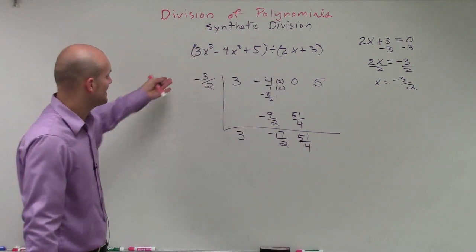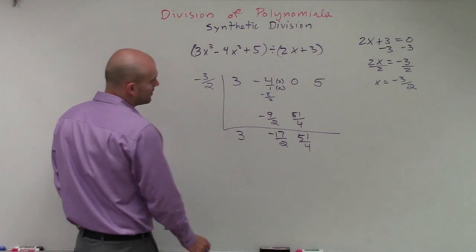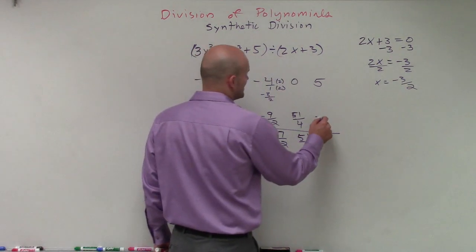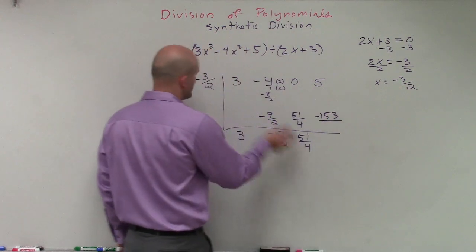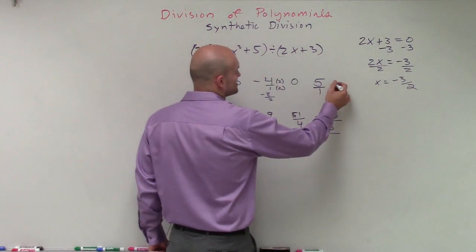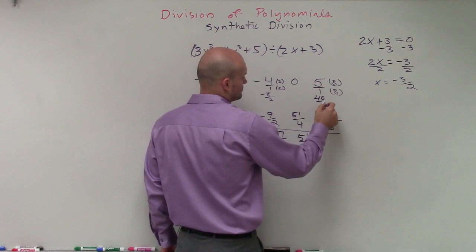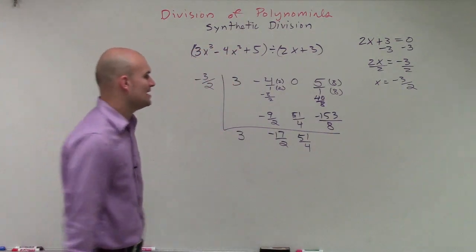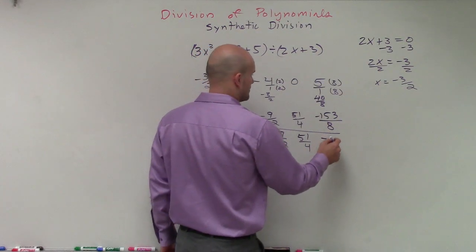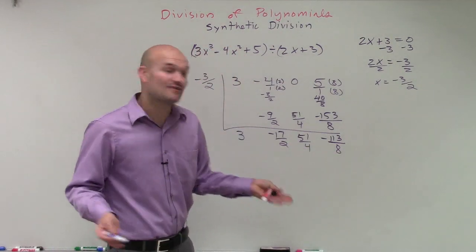I multiply again: 51 over 4 times negative 3 over 2 gives negative 153 over 8. Then I add 5, converting it to 40 over 8 by multiplying by 8 over 8. Adding those gives negative 113 over 8. That's our remainder — it's a fraction, but that's OK.